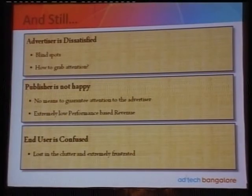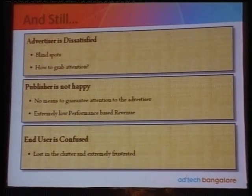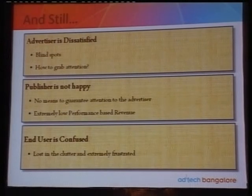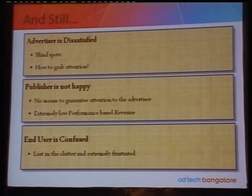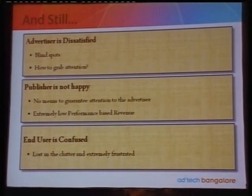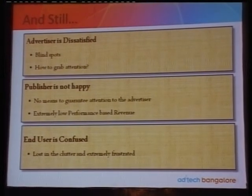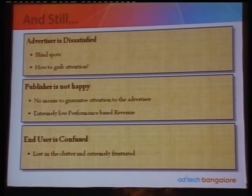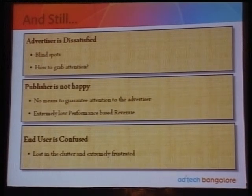For the publisher, he has no mechanism to give guaranteed attention to advertisers. That's why the entire revenue model is moving towards performance-driven: CPC, CPL, cost per action, lots of performance parameters — and he is not earning enough money from these performance-based revenue models as he used to earn from CPM models. And for the end user, he's totally confused about whether he's come for the ads or the content.